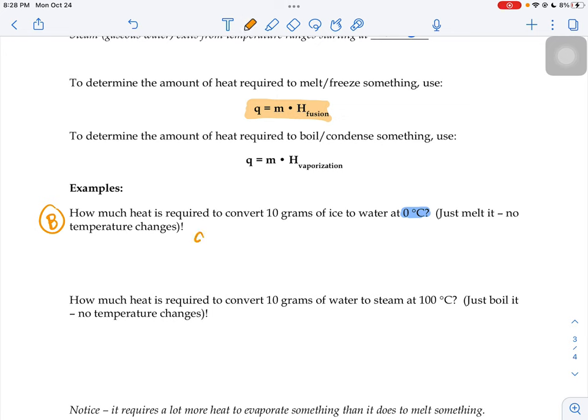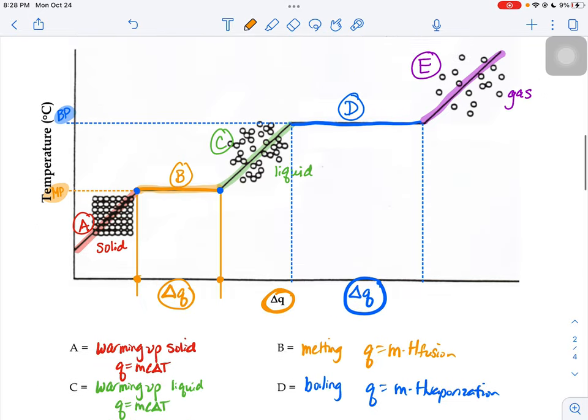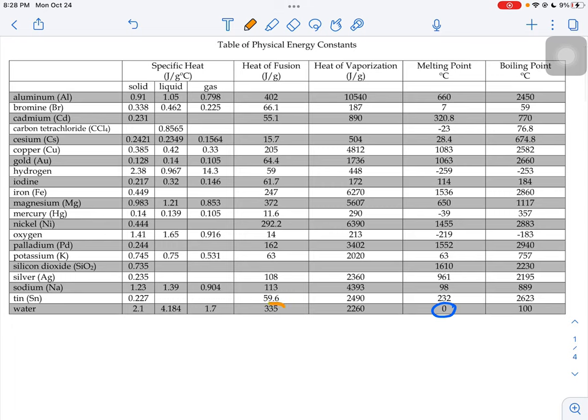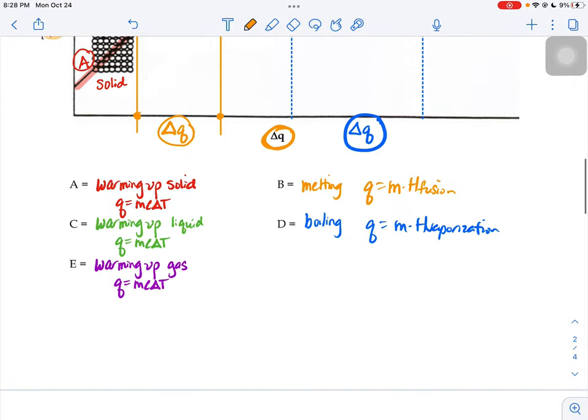So I know the mass of my ice cube is 10 grams. And now I need the heat of fusion for ice, water. So you go to your chart and find ice's heat of fusion number, water's heat of fusion. It's this number right here, that 335 joules per gram.